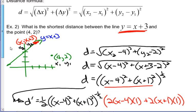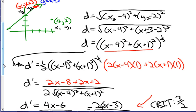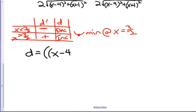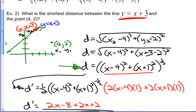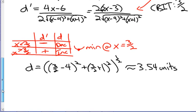Now that we've found that x value, let's go back and check what the question is asking for — the shortest distance between the line and the point. We substitute x equals 3/2 back into the distance formula: square root of (3/2 minus 4) squared plus (3/2 plus 1) squared, all to the half. Working through that on the calculator, we should get a distance of about 3.54 units. It was the same process: draw a picture, make an equation, differentiate, find critical values, test them, and make sure you've answered the question.